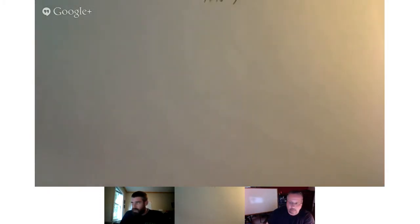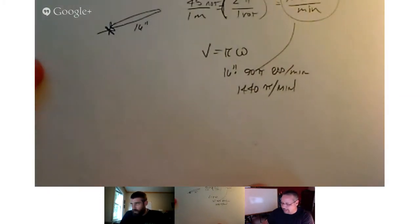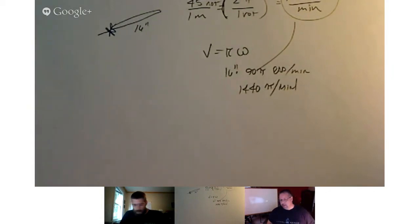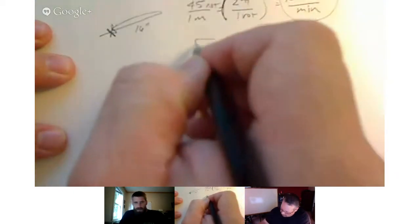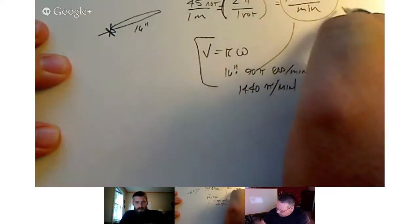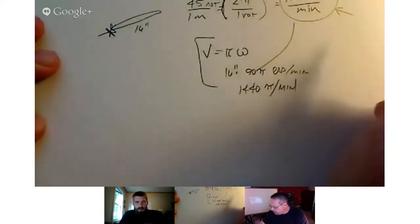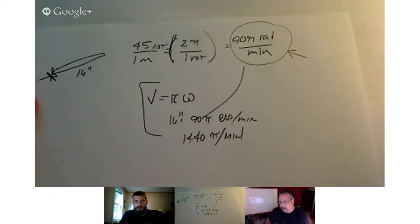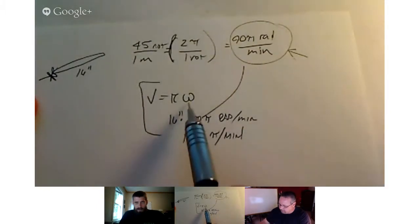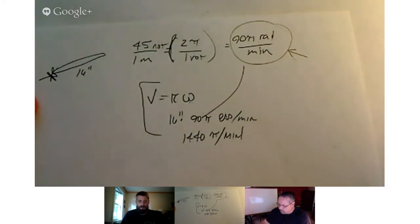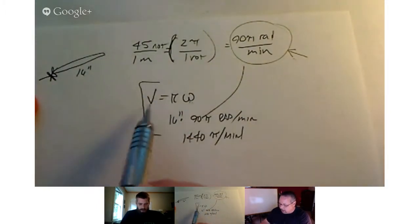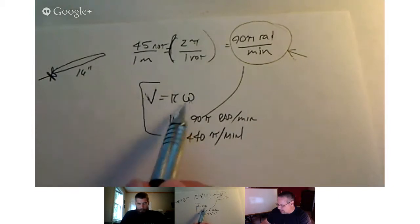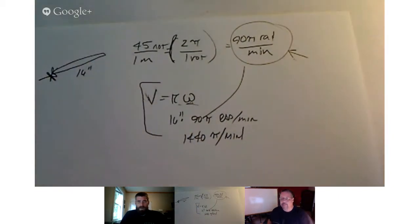That's the linear speed, right? — Well, this right here is linear speed, and this is angular speed. This is our omega value, and our linear speed is based off of that value.